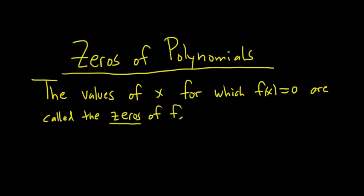These are the zeros. So just a really quick example. Say you had f(x) equals x minus 2. What number could you plug in here to make this zero? Well, two, right?